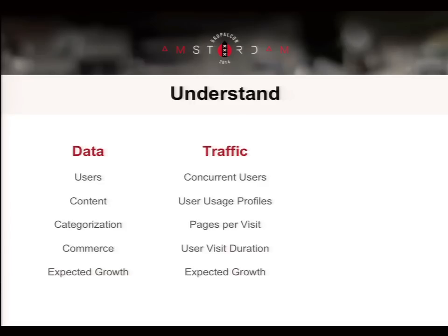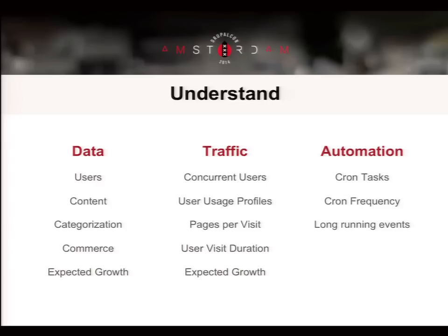The second area is understanding your traffic. Just because you have 100,000 nodes doesn't mean you're going to have a million hits per day. You might have a lot of storage requirements but not necessarily a lot of traffic requirements. If you have a pre-existing site, look at the old analytics to see what the traffic might be, because what you use at the front end is going to be different from what you use at the back end. The third is automation — what kind of heavy lifting tasks might happen that aren't traffic bound, like content ingestion or bulk reporting.